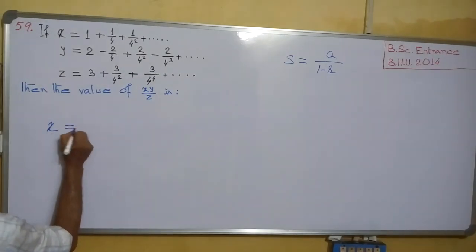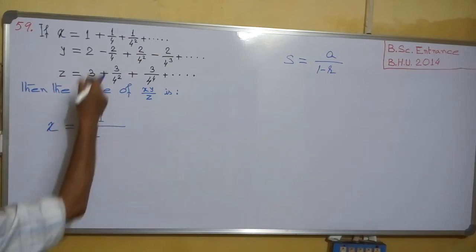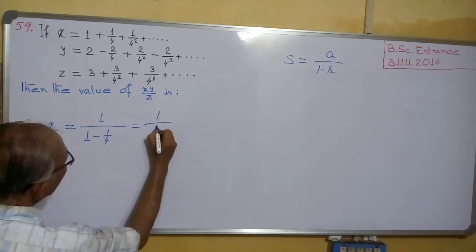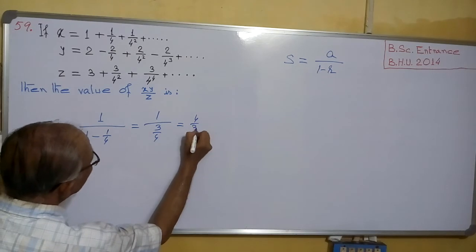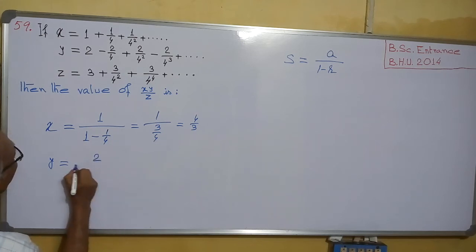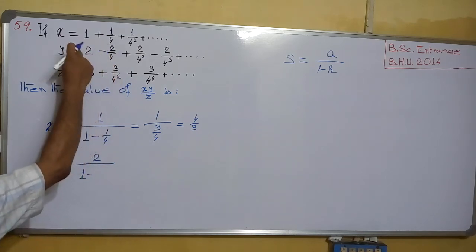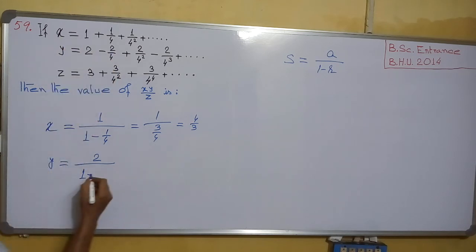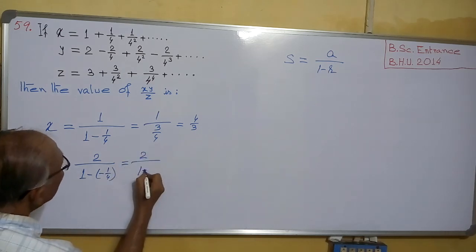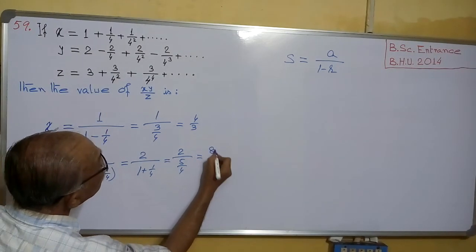So x: here a = 1, r = 1/4. So x = 1/(1 − 1/4) = 1/(3/4) = 4/3. Now y: first term is 2, r = −2/4 ÷ 2 = −1/4. So y = 2/(1 + 1/4) = 2/(5/4) = 8/5.